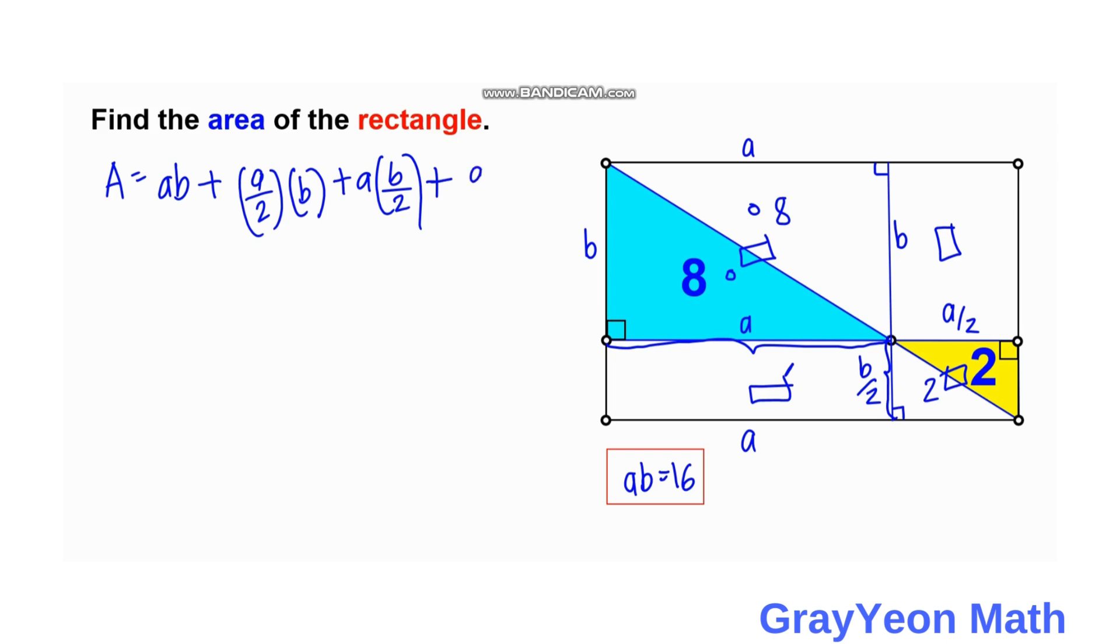And we simplify, we have A is equal to AB plus AB over 2. So AB over 2 plus AB over 4. So next is we substitute this AB with 16.